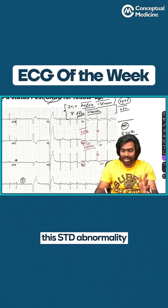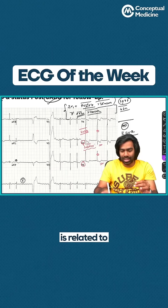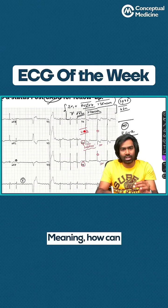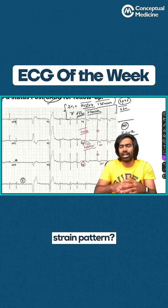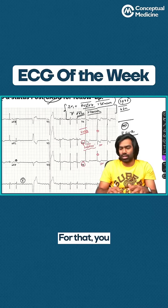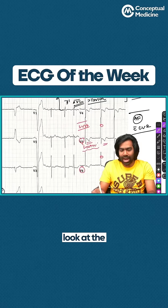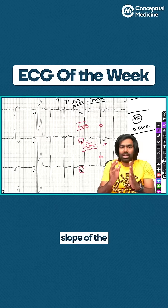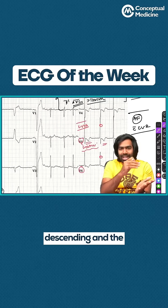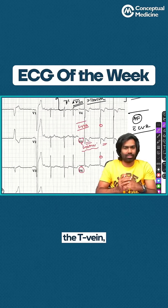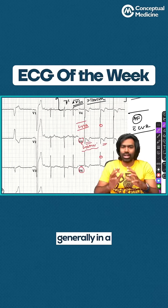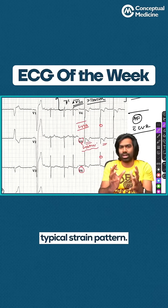Now, how can I say that this STT abnormality is related to LVH? Meaning, how can you really call this a strain pattern? For that, you need to really look at the slope of the descending and the ascending limbs of the T-wave, generally in a typical strain pattern.